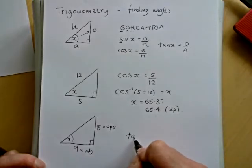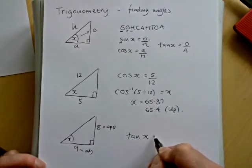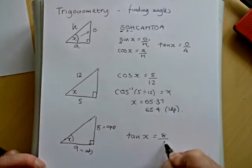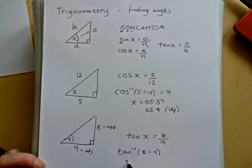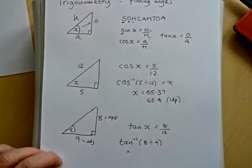What we can say is then that tan of our angle equals 8 ninths. So then to get the angle itself, we do tan minus one, 8 divided by 9 into our calculator, which I'll now do.